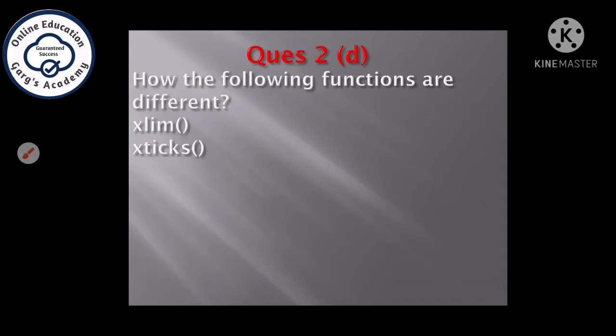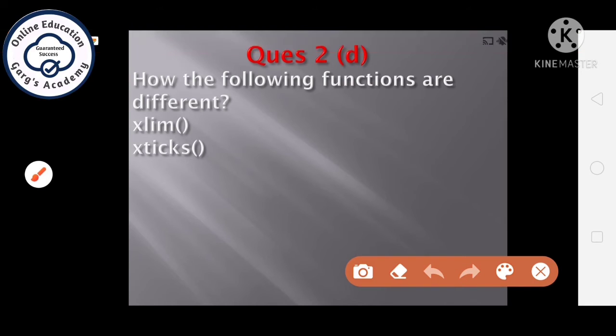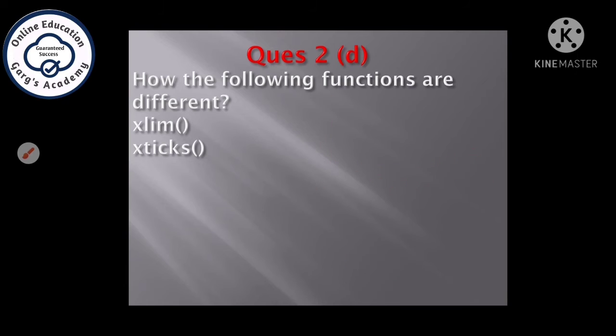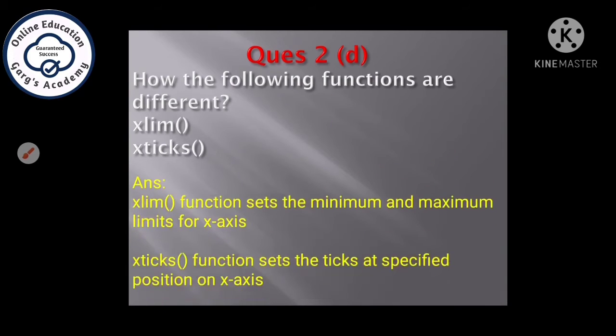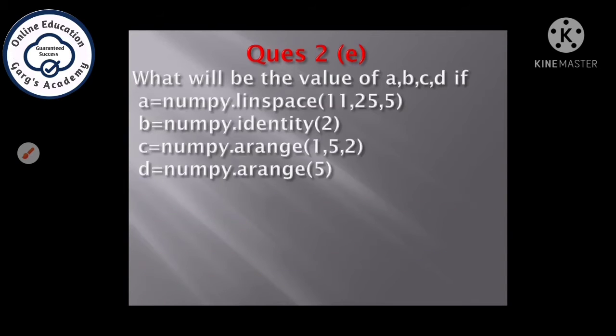Next question, question second D part, how are the following functions different, xlimit and xticks? Students, xlimits function always is used to set the minimum and maximum limits for x axis, but xticks function is used to give the tick marks on the x axis. So you can write, it sets the minimum and maximum limits, but xticks sets the ticks at the specified position on x axis.